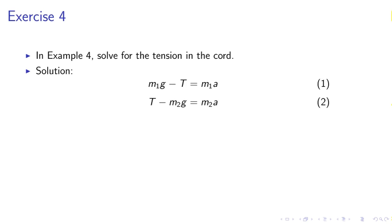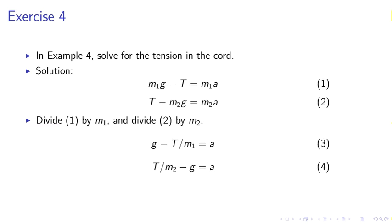Solution. M1 g minus T equals M1 a. T minus M2 g equals M2 a. We eliminate A between the two equations and solve for T.